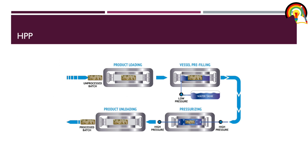In the schematic diagram of high pressure processing, the product is loaded and sent to a vessel for pre-filling, where high pressure will be applied. A hydraulic fluid — mainly water — is used: high pressure is first applied to the water, and then the pressure is transmitted to the food. This usually lasts for three to five minutes.